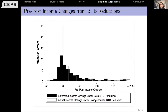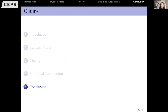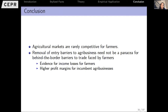If the policy hadn't taken place, the income changes from the pre-period 2000–2004 to 2007–2010 would have been the gray bars. But the entire distribution of income shifts to the left, because we're seeing a reduction in incomes for those selling to agribusiness firms. To summarize: we know agricultural markets are really competitive for farmers, and while a reduction in entry barriers might be expected to help farmers access markets, what we actually find is income losses for farmers and higher profit margins for incumbent agribusinesses — suggesting that deep sources of market power aren't simply lifted by shifting to agribusiness-led development.